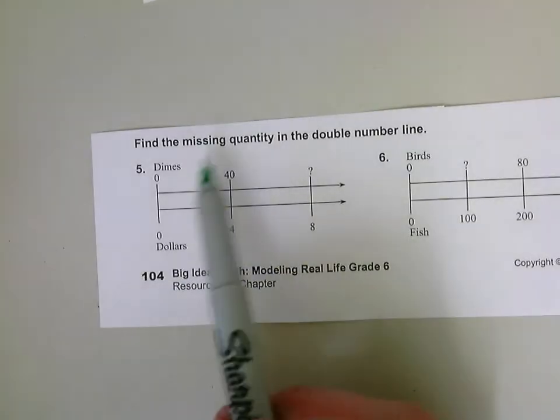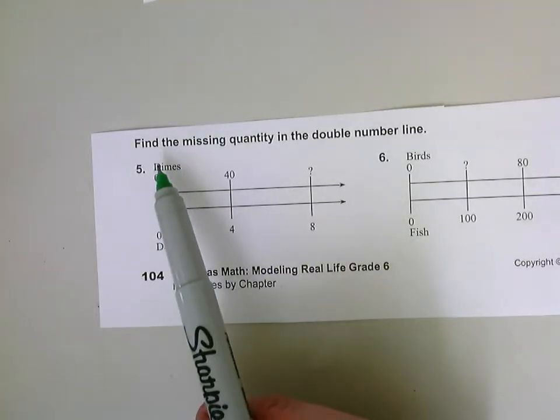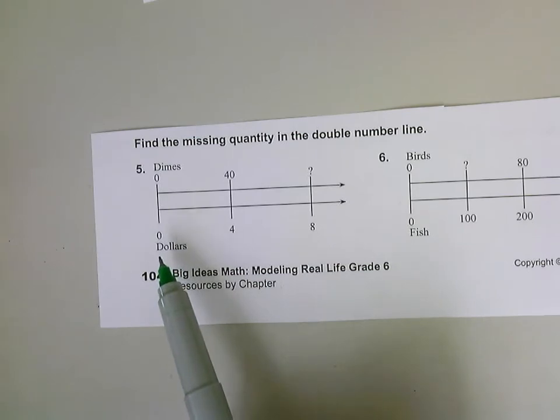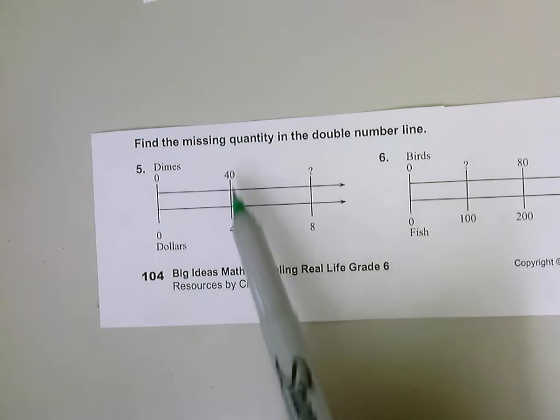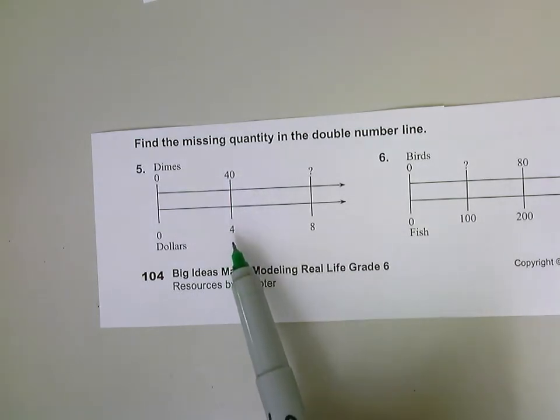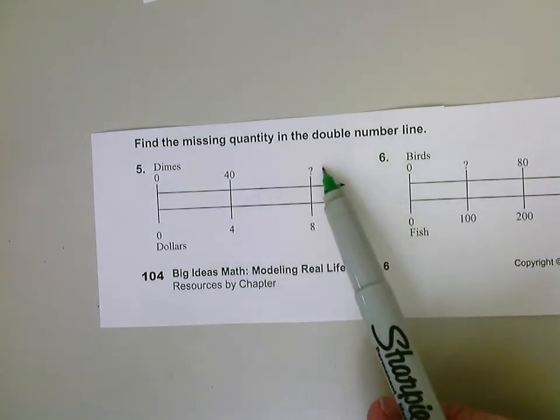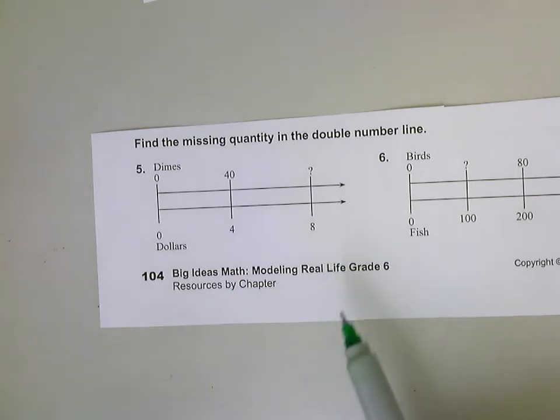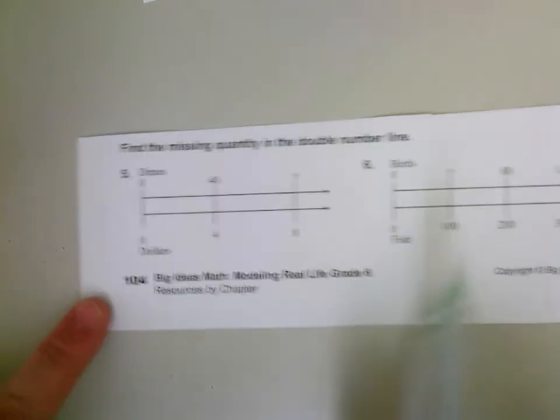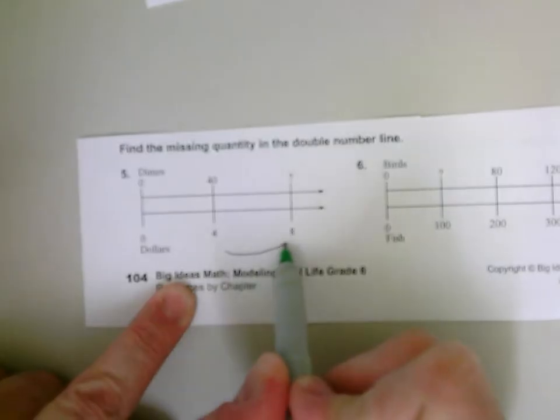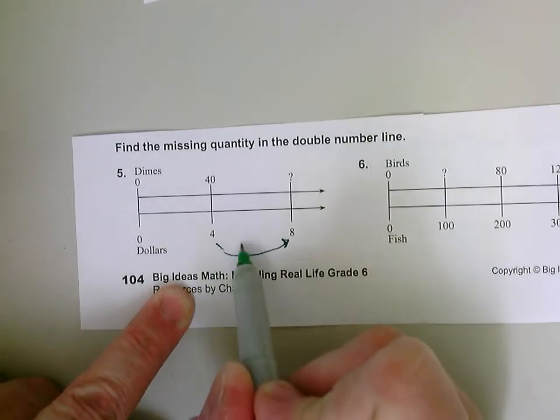So here we have a double number line of dimes to dollars. So zero dimes is zero dollars. Forty dimes is four dollars. How many dimes are eight dollars? So we can use the same strategy that we used in the last one. Well, I can add another group of dollars. I started with four dollars. I can add another group of dollars, add four here. And I can add another group of dimes, add 40 here.